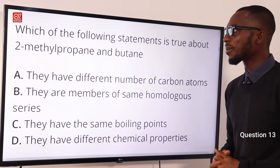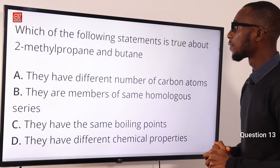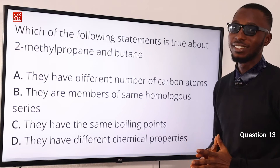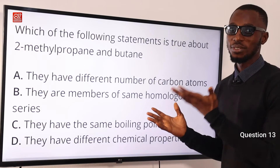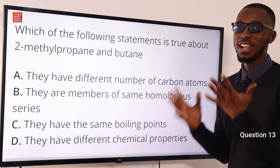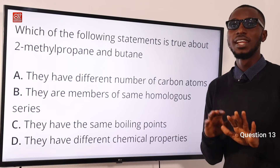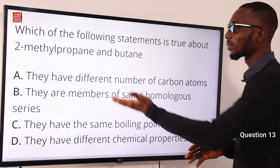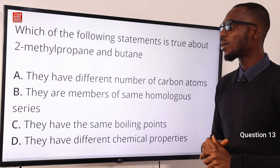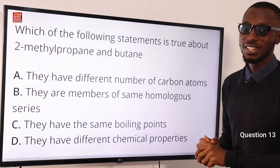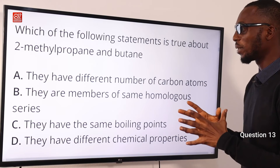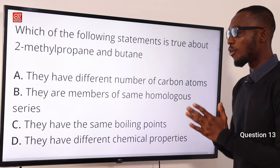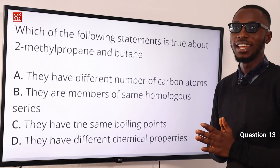Number 13. Which of the following statements is true about 2-methylpropane and butane? These are actually isomers — they have similar chemical properties and they are from the same homologous series. So the correct option is option B: they are members of the same homologous series, alkanes.